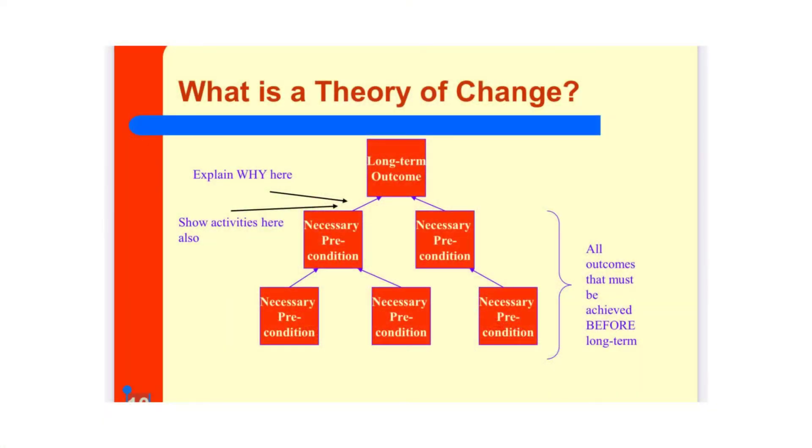Activities can be clearly linked to outcomes, and ultimately a theory of change provides the opportunity for review and reflection, both from inside and outside a team, because the thinking is explicit. So to recap from Clark and Anderson, theories of change link outcomes and activities to explain how and why the desired change is expected to come about. They're sometimes called a causal model, as it's explaining why something will cause something else.